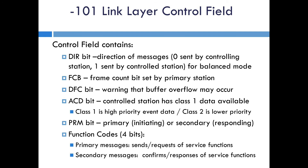The PRM bit tells you if this is the primary or initiating station, or the secondary or responding station. And then there are the function codes, which tell you what type of request or response is being sent. These are different for balanced versus unbalanced modes — they have different requests and different responses. So that's about it for the 101 link layer.